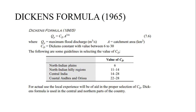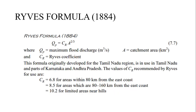For peak discharge there are also empirical formulas. The Dickens formula uses CD (the Dickens constant, varying between 6 to 30 for different regions) and the catchment area in km² to give peak discharge. Similarly, the Ryves formula uses CR (6.8 for areas within 80 km from the east coast, 8.5 for areas near hills), applicable to Karnataka, Andhra Pradesh, and Tamil Nadu.